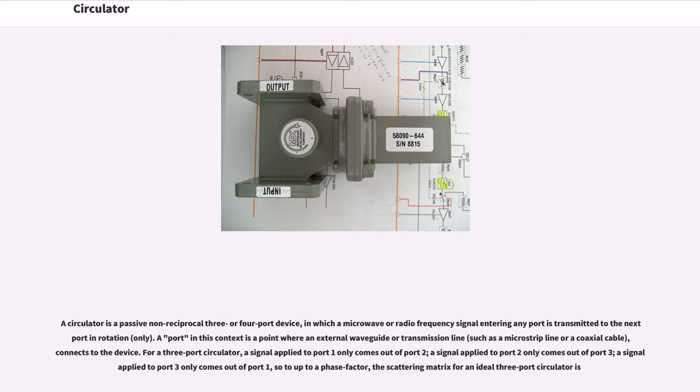Circulator. A circulator is a passive non-reciprocal 3 or 4 port device, in which a microwave or radio frequency signal entering any port is transmitted to the next port in rotation. A port in this context is a point where an external waveguide or transmission line connects to the device. For a 3 port circulator, a signal applied to port 1 only comes out of port 2.